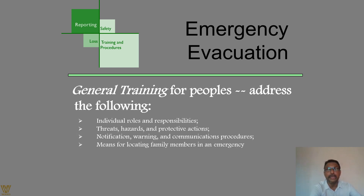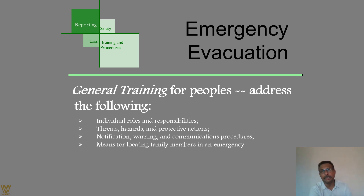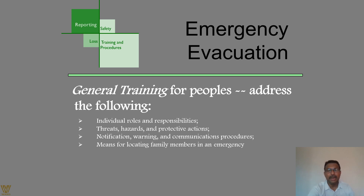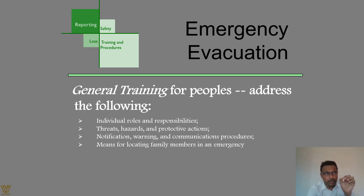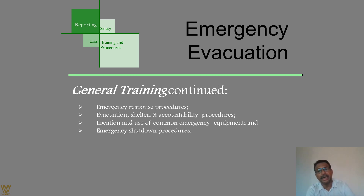General training for people should cover: individual roles and responsibilities, understanding threats and hazards, protective actions, notification and warning communication procedures, and means for locating family members in an emergency. A public address (PA) system can allow people to let their family know they are safe, giving a sense of confidence, relief, and mental peace. People should know the threats, hazards, warning signs, what to do, how to communicate, and what their individual roles are.